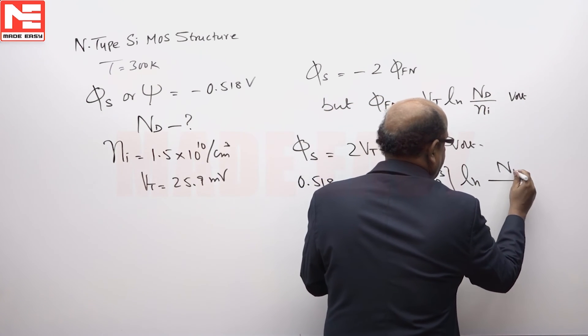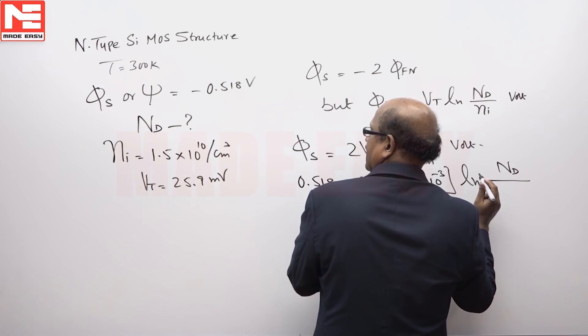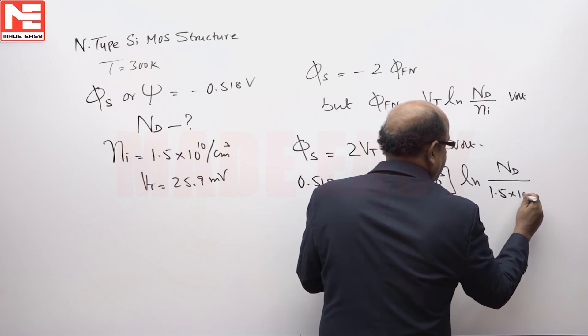N_d, it is the unknown, divided by n_i, 1.5×10^10.